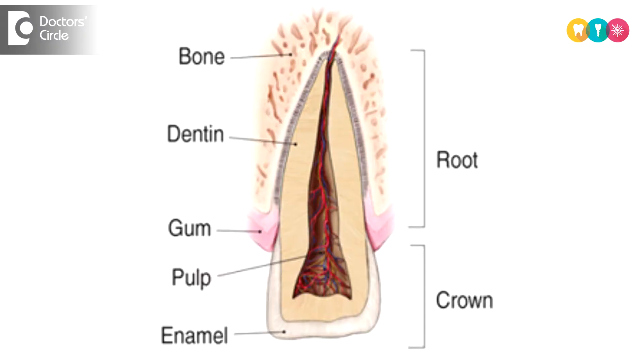Basically the teeth contains three layers, the outermost being the enamel, the innermost being the pulp and in between we have the layer of dentine. Enamel is the layer which is completely inorganic and does not contain any nerves and blood supply. The dentine is the second layer of the tooth where the nerves end and hence it is sensitive.